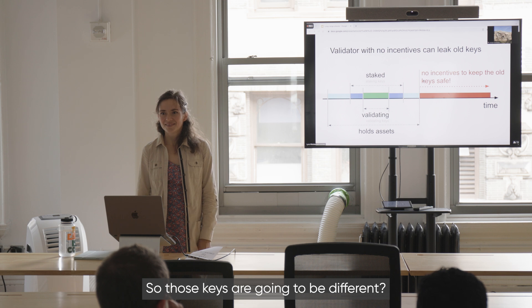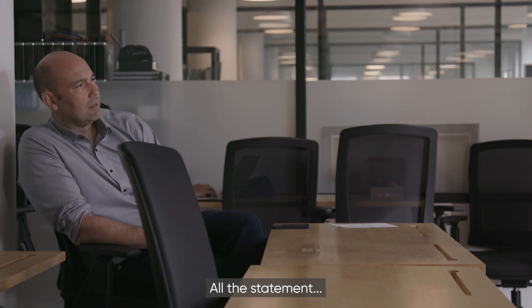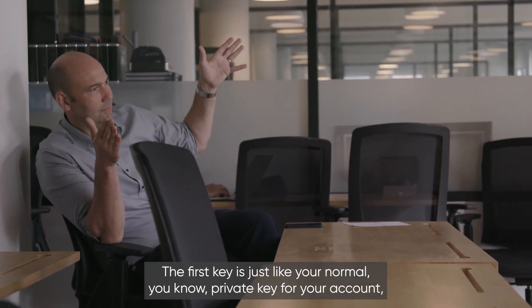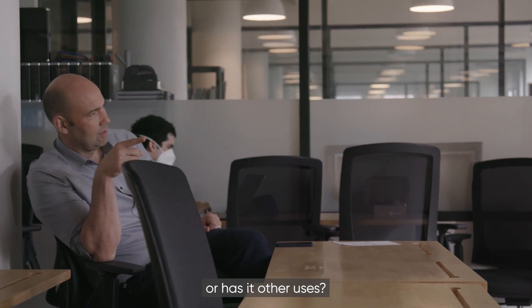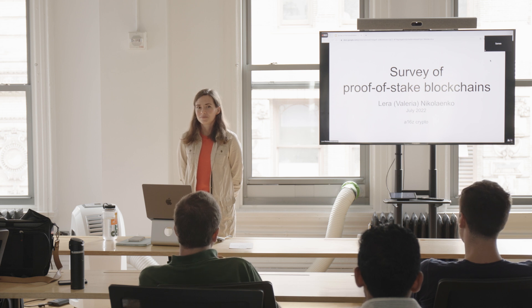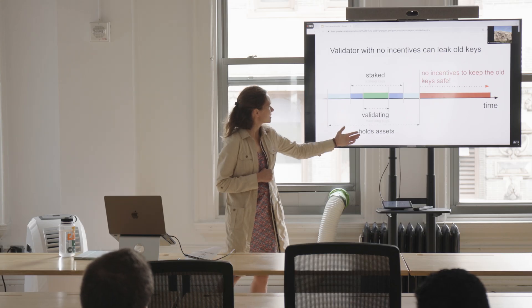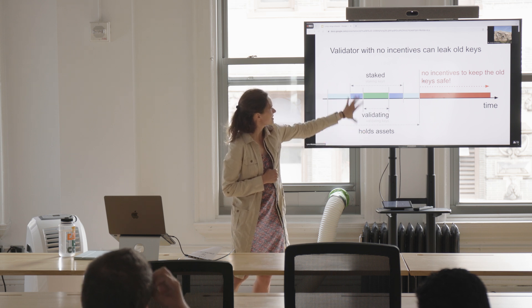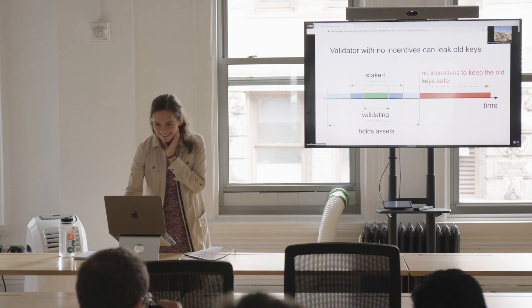Question: are the staking keys and validating keys different? Typically there are three different keys. The first is a normal private key for your account to move assets around. The staking key is used to withdraw your stake. The validating consensus key is what you use to cast votes. You can compromise the asset key — which then compromises the staked and validating keys — or compromise just the validating key to cause disruption to consensus.